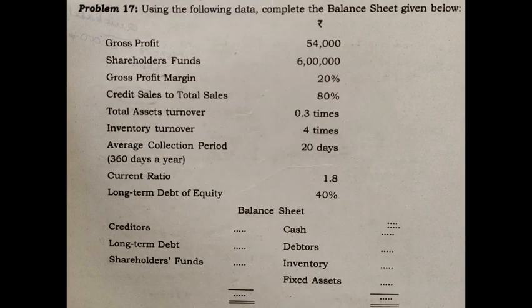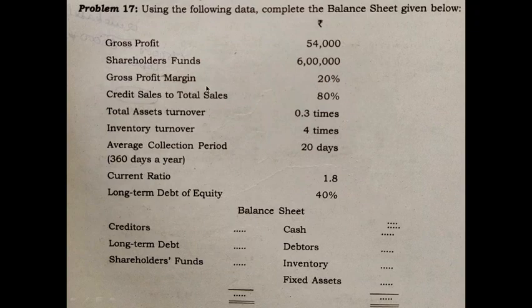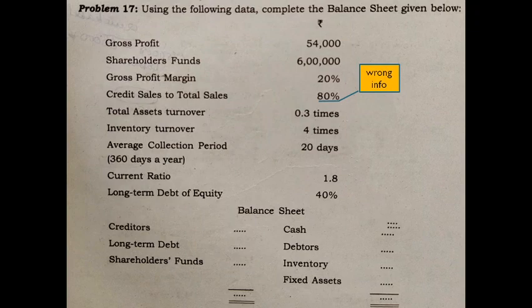Next case: using the following information, complete the balance sheet. The information given is gross profit 54,000; shareholders fund, otherwise known as equity, 6 lakhs; gross profit margin 20%. Credit sales to total sales is 80%, but this information is not required in this particular question because for the computation part, this 80% is not considered.